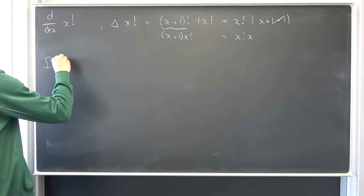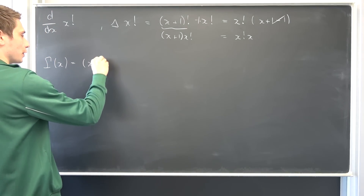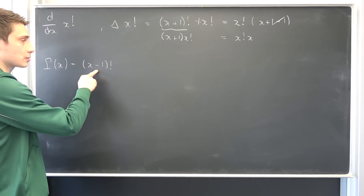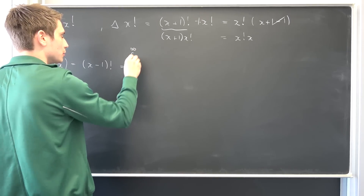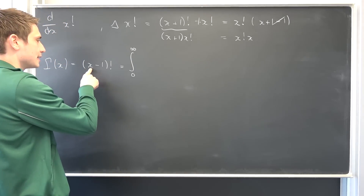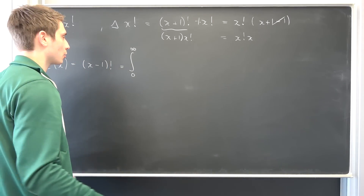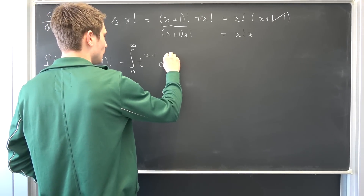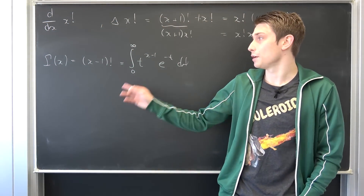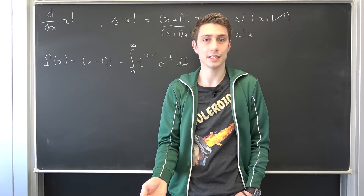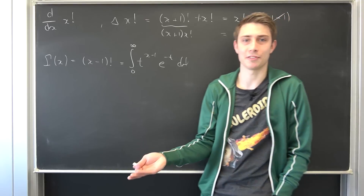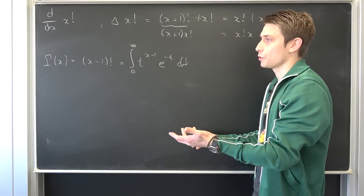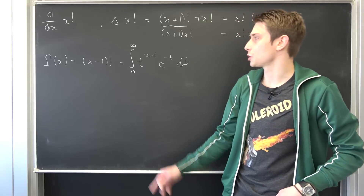If we take a look at Γ(x), it equals (x−1)!. But we can make a change of variable: Γ(x+1) = x!, and that's nothing but the integral from 0 to infinity of t^x · e^(−t) dt. You can analytically continue this to the complex numbers. You can differentiate this using Leibniz's rule for integration under the integral sign, just parameterize it with x.